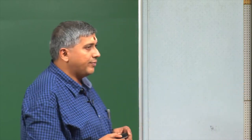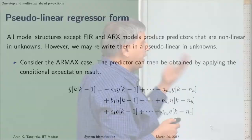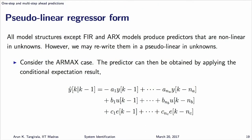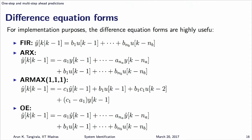Structures like RMAX and OE do not lend themselves to a nice linear regression form. If you go back to the difference equation form, you identify the regressors and parameters. For RMAX, the regressors include minus y(k-1), u(k-1), and the one-step ahead prediction error epsilon. These prediction errors are themselves a function of the model, which means the regressor is also a function of theta. Therefore, for RMAX models, I cannot write a pure linear regression form.